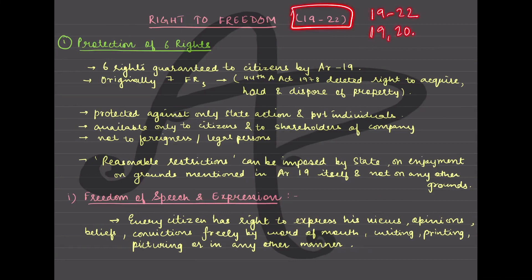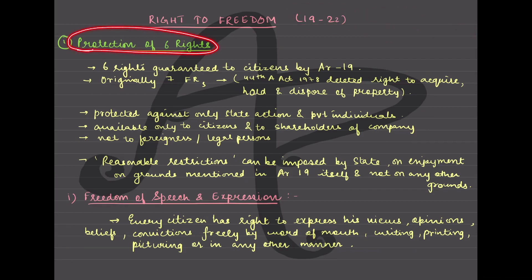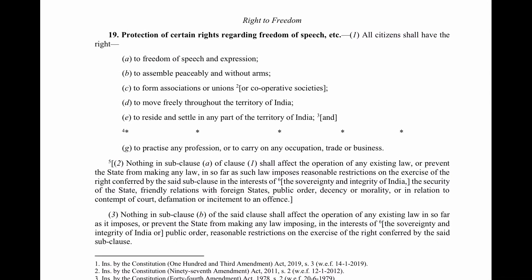So you have Articles 19, 20, 21, 21A and 22. These five rights are in the right to freedom. But in this video we will talk only about the first one, which is the protection of six rights. As is our custom, we will first read it from the constitution directly. Article 19 talks about protection of certain rights regarding freedom of speech etc.